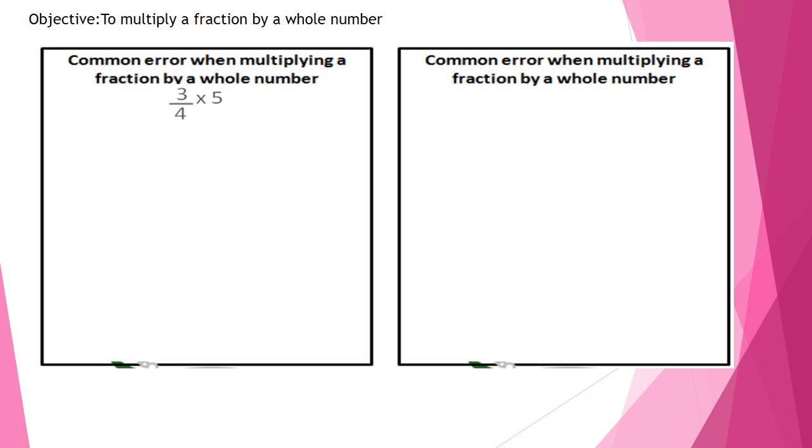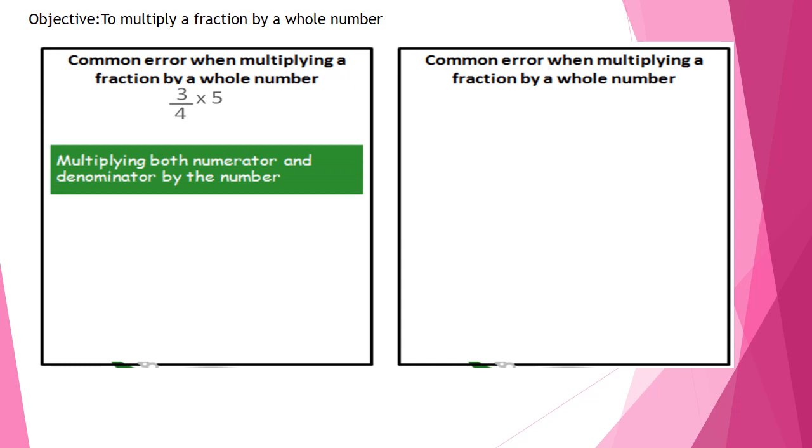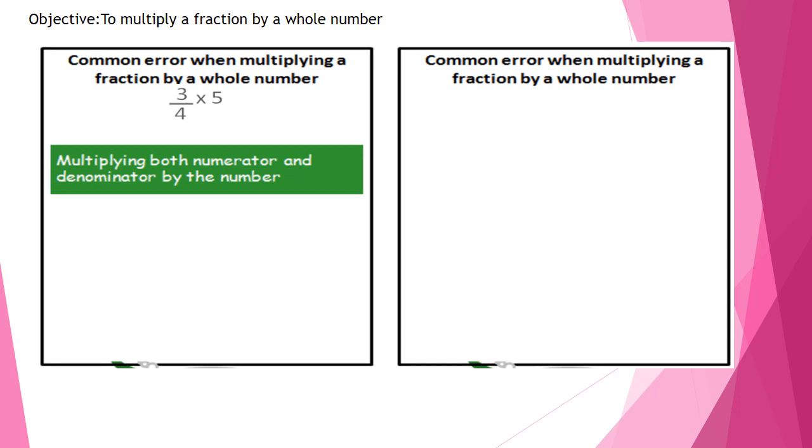If I want to make 3 over 4 times 5, some students might do this mistake. They might multiply both the numerator and denominator by the number 5. So they make it 3 times 5, 15, 4 times 5, 20, which is a wrong answer.